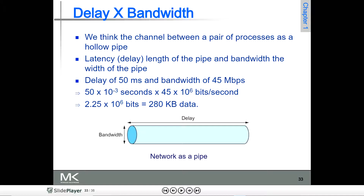If you multiply these two things, you are going to get 2.25 into 10 to the power of 6 bits, that is a size of 280 KB of data you can send with 50 milliseconds and a bandwidth of 45 Mbps.